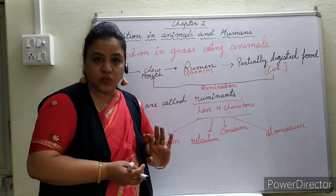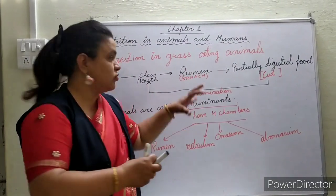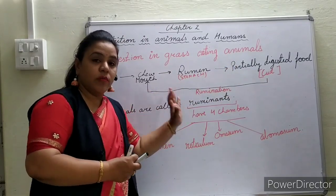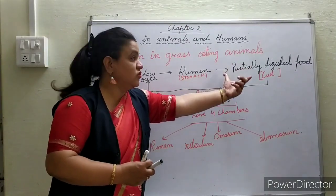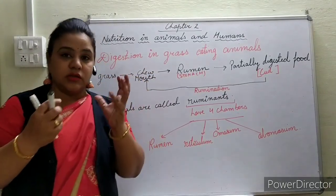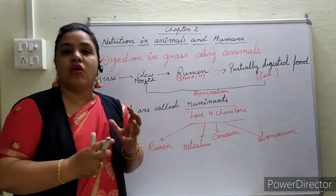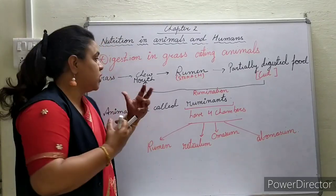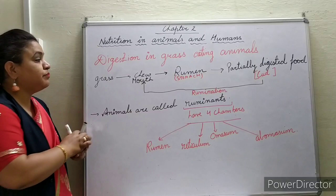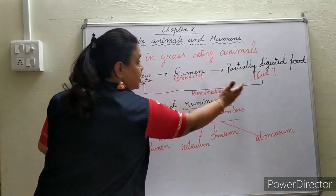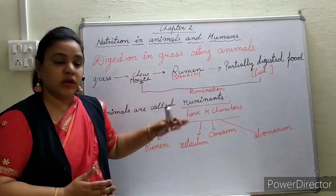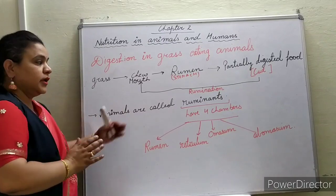When grass-eating animals eat grass, it enters the stomach as partially digested food. When the animals are free, they send this partially digested food back to the mouth to chew it again. This is called cud, and the process is called rumination. Animals that do this are called ruminants — for example, the cow is a ruminant.